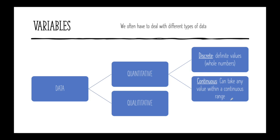Now we're talking about variables. We often have to deal with different types of data. From data, we saw that we have two types: quantitative, which deals with numbers, and qualitative, which is more descriptive.